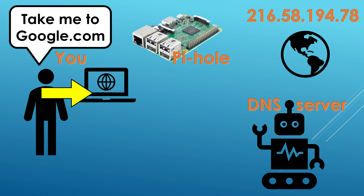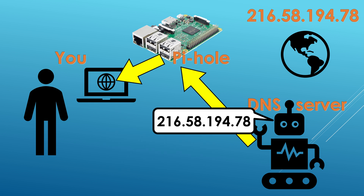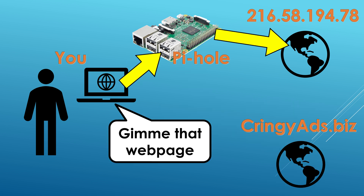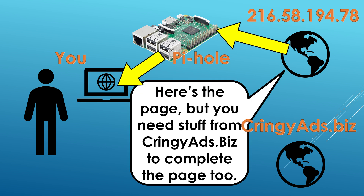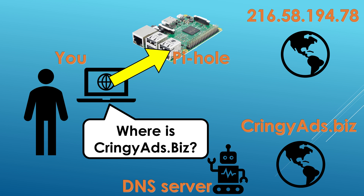Now that you have a PhD in how the internet works, we can introduce the Pi-hole and show how it would block ads at the DNS level. 'Where is google.com?' 'Google.com is located at 216.58.194.78.' 'Hey friend, give me that sweet webpage goodness.' 'This webpage contains content from cringeads.biz — you'll need to look them up and get more stuff from there to complete the webpage.' 'Where is cringeads.biz?'